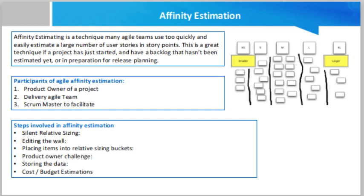The steps involved in affinity estimation start with silent relative sizing. The product owner provides the user stories to the team, and the agile team silently establishes the relative sizes of the user stories. The team arranges these stories in ascending order on a horizontal scale, rearranging notes or index cards until the entire team is satisfied. This step is performed silently to keep the process quick and non-confrontational.